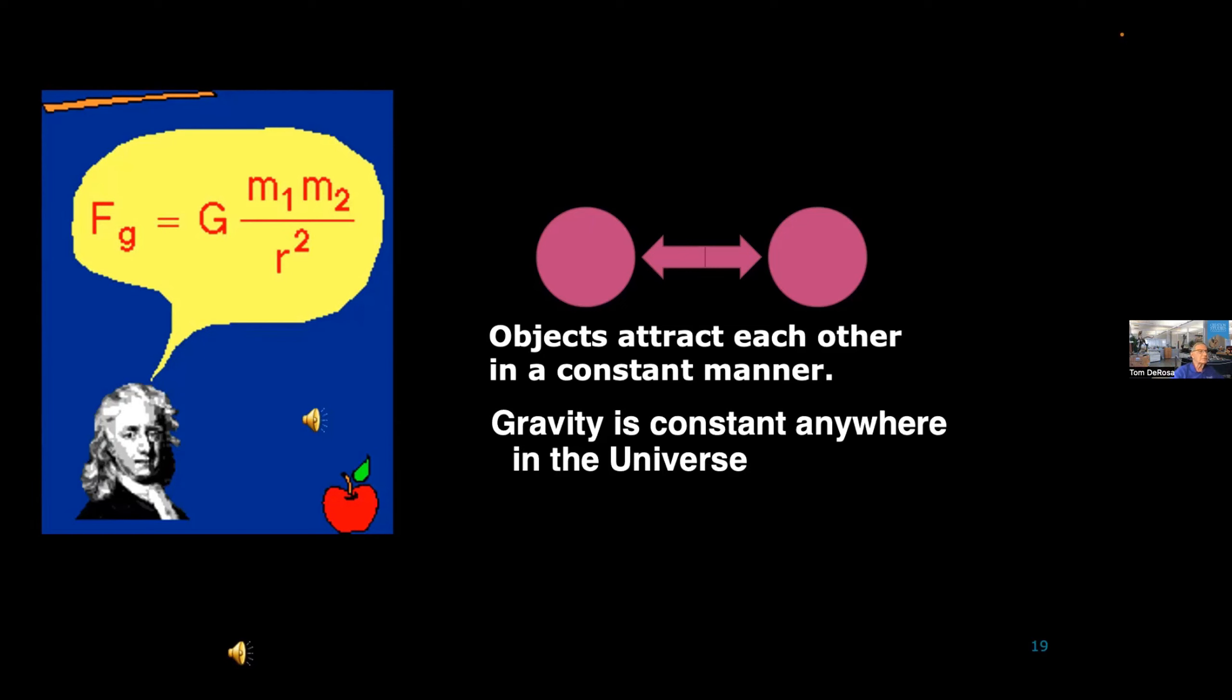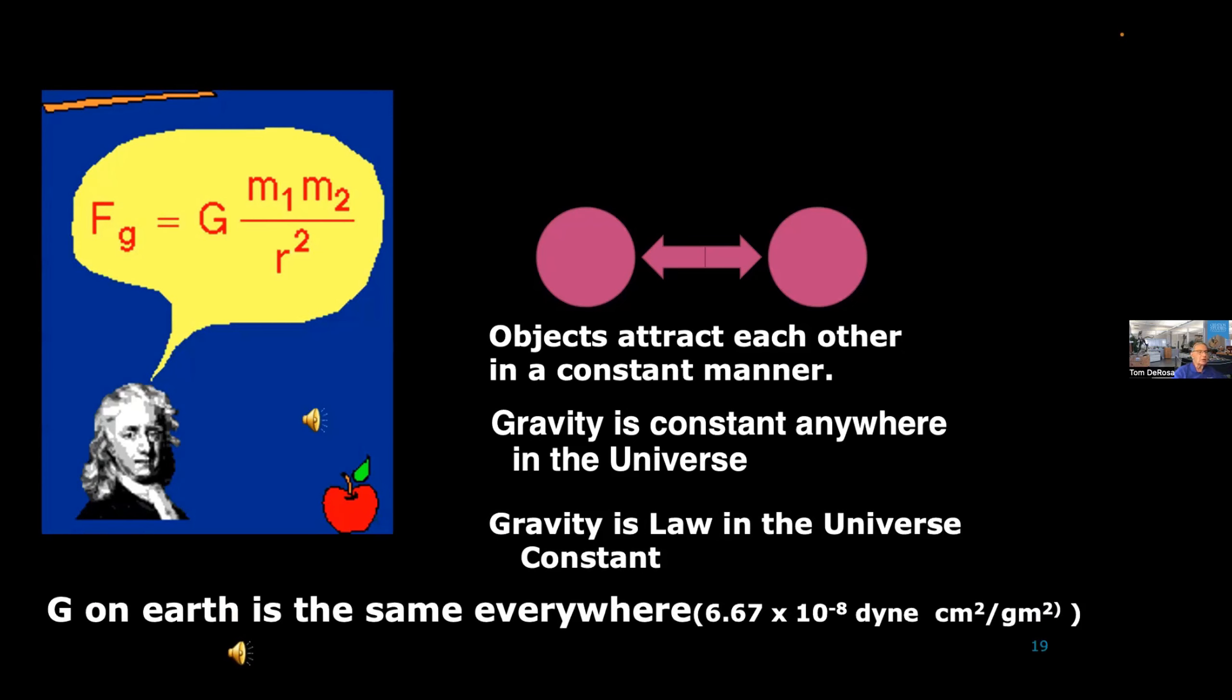So gravity is a constant in the universe. He concluded that. He said anywhere in the universe, gravity is constant. Gravity is the law in the universe, and we establish it with a constant, 6.67 times 10 to the minus 8th dyne centimeter squared gram cubed. Don't worry about that. I used that in physics class, and we were able to determine the weight of almost anybody, any mass, if they went to Mars, Jupiter, or wherever they wanted to go. We were able to determine their weight by using this equation right in front of you. It works.